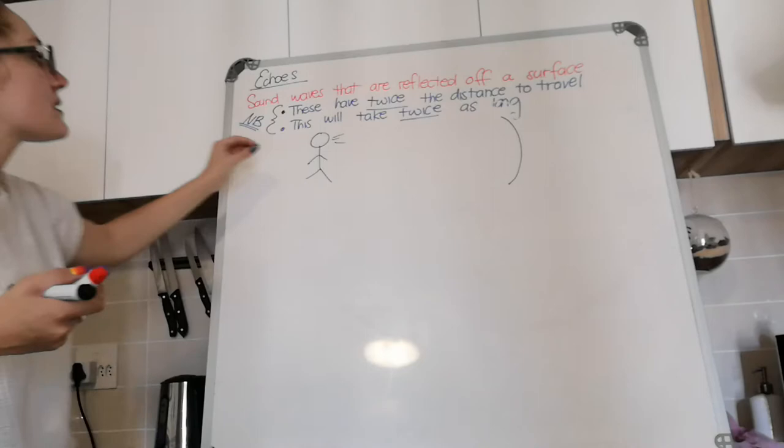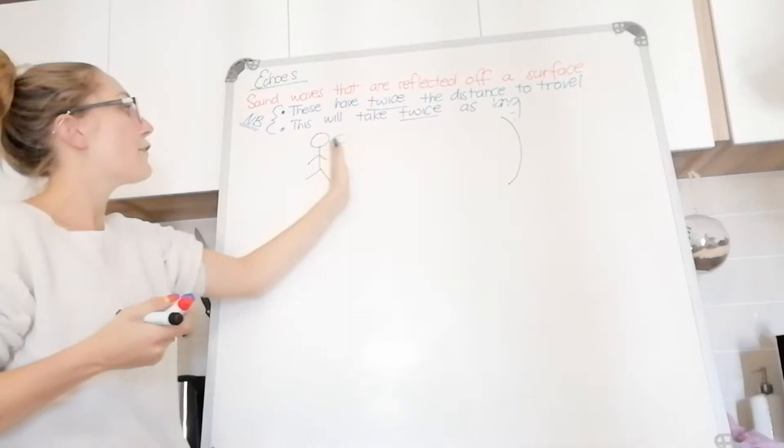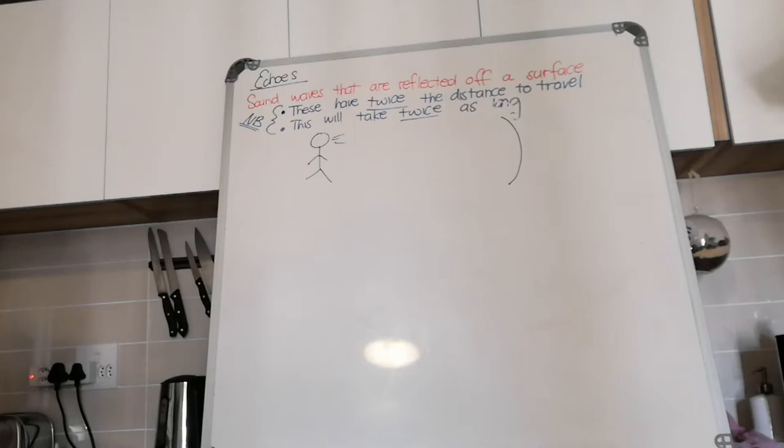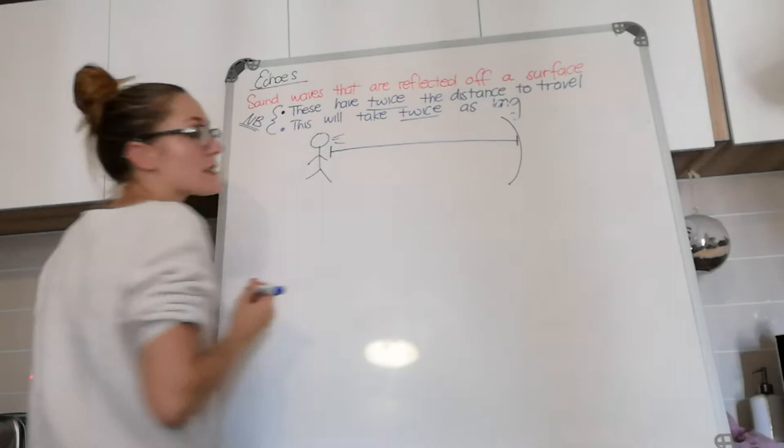Exactly how far away an object is. To do that, very important to remember that whatever the distance is from the source of the sound to the reflective surface, we're going to call our distance d.